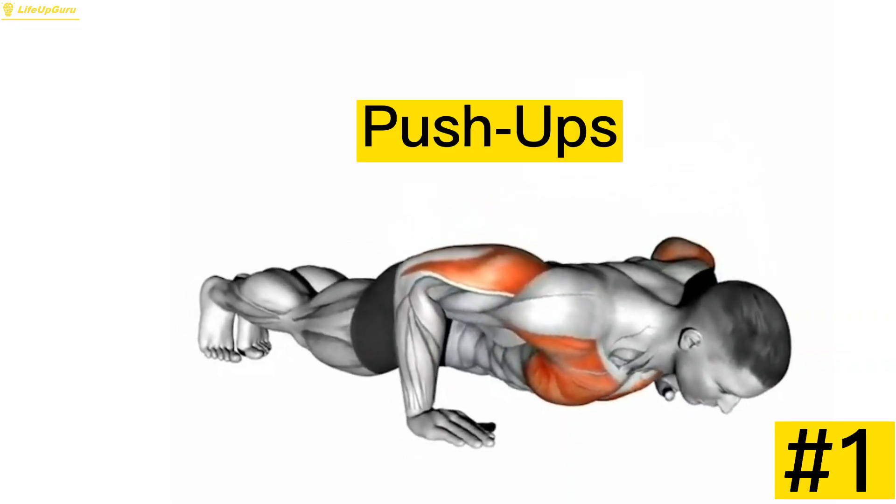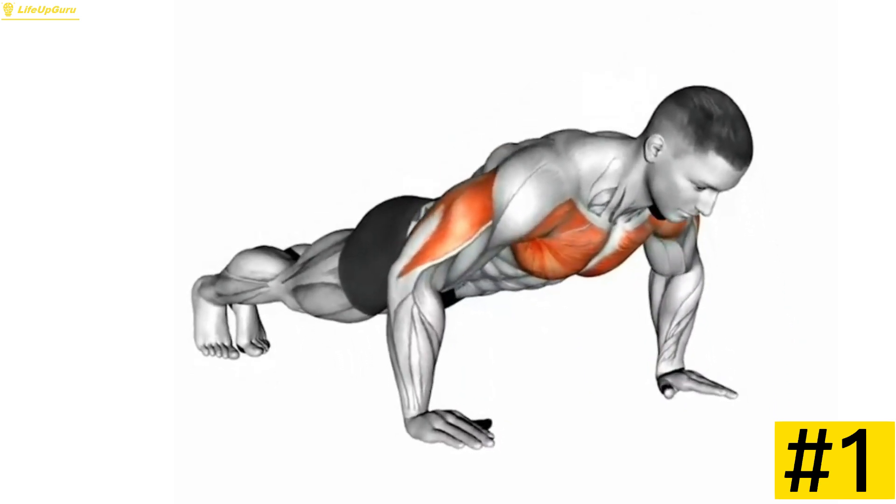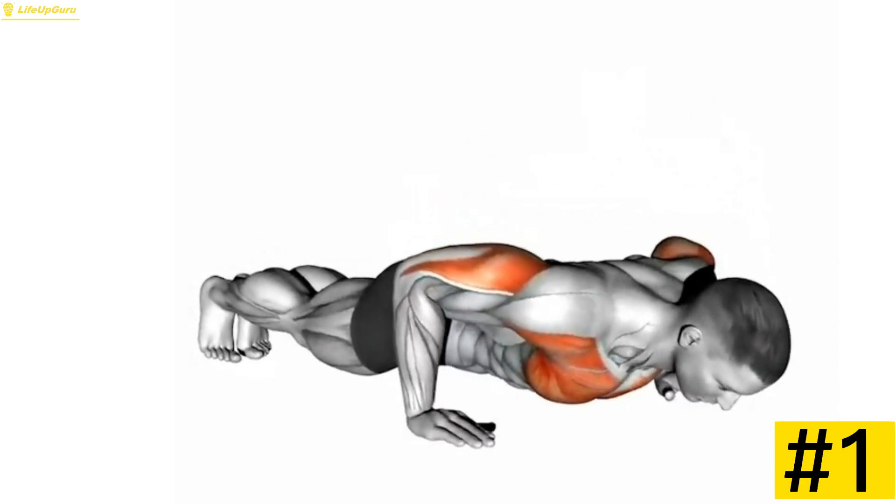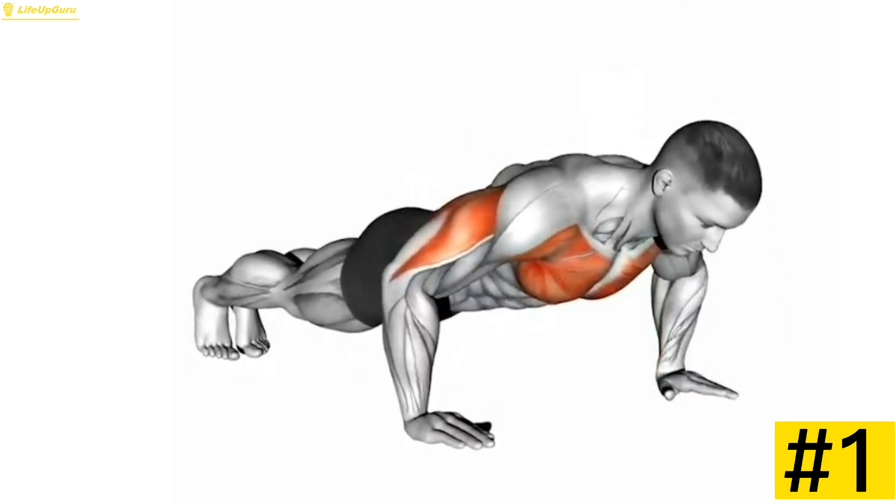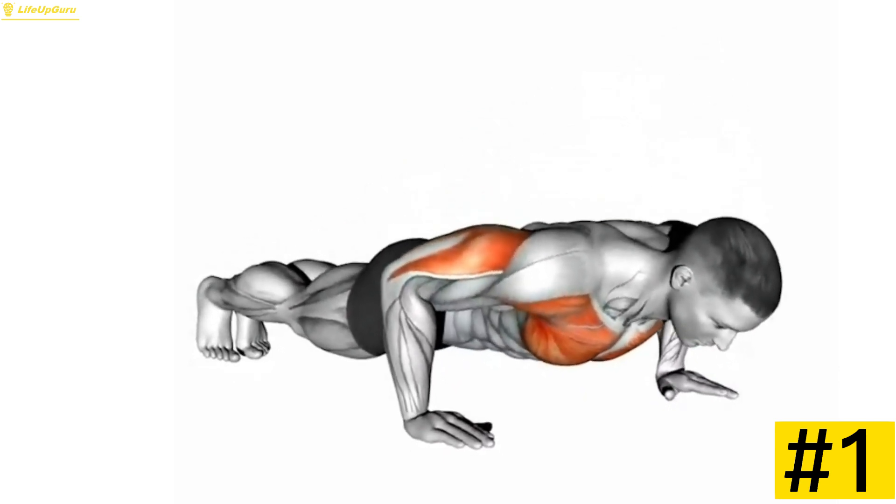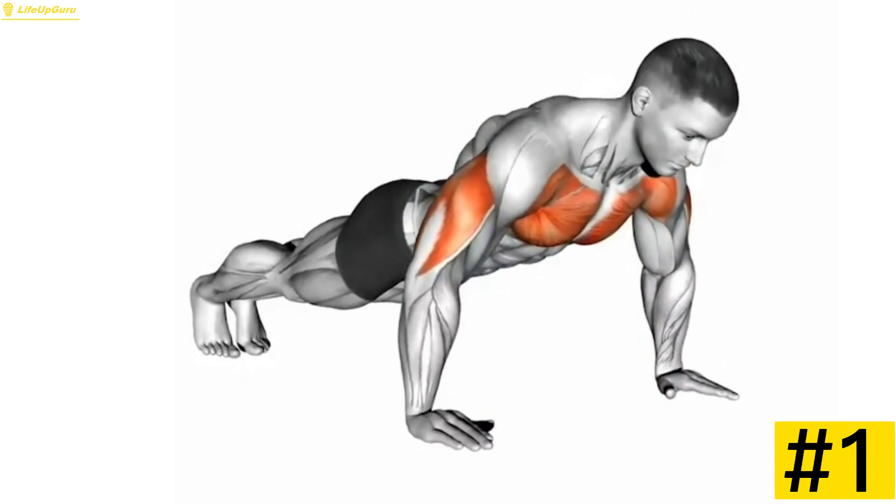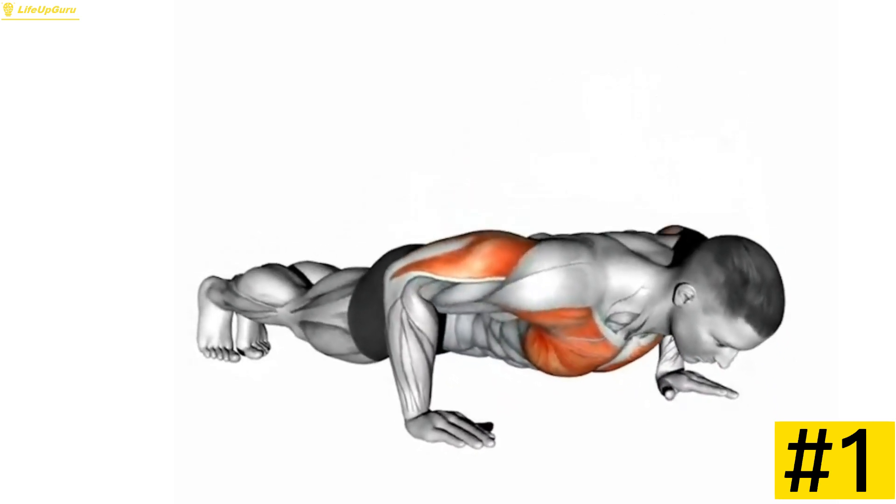Exercise 1, Push-Up. The classic push-up. This compound movement engages multiple muscle groups, including your chest, shoulders, triceps, and core. Start with a proper plank position and lower yourself down, keeping your body in a straight line. Push back up, and repeat for the desired number of reps.